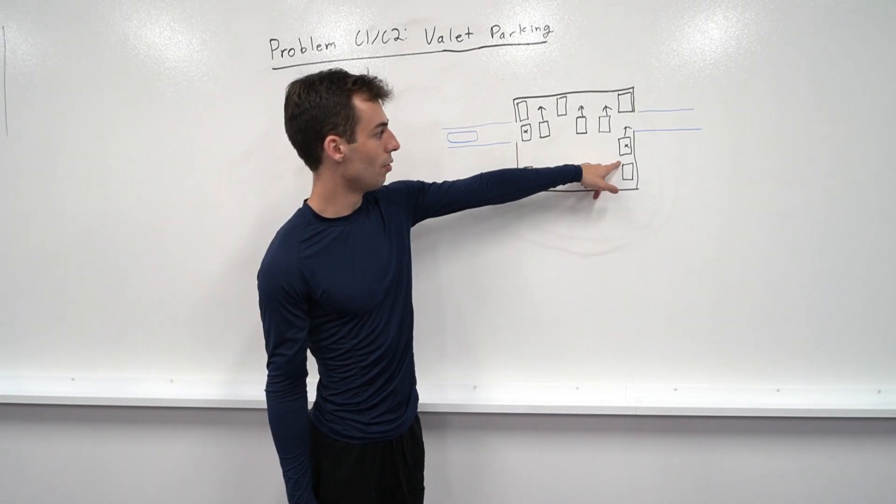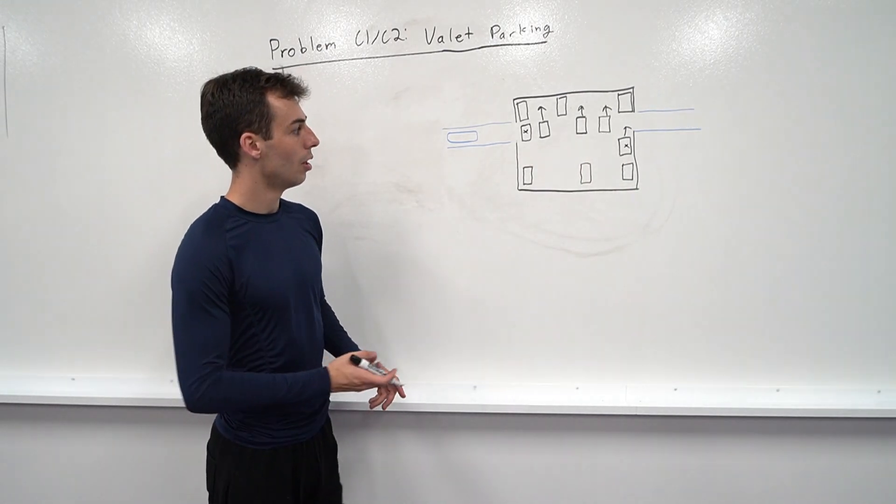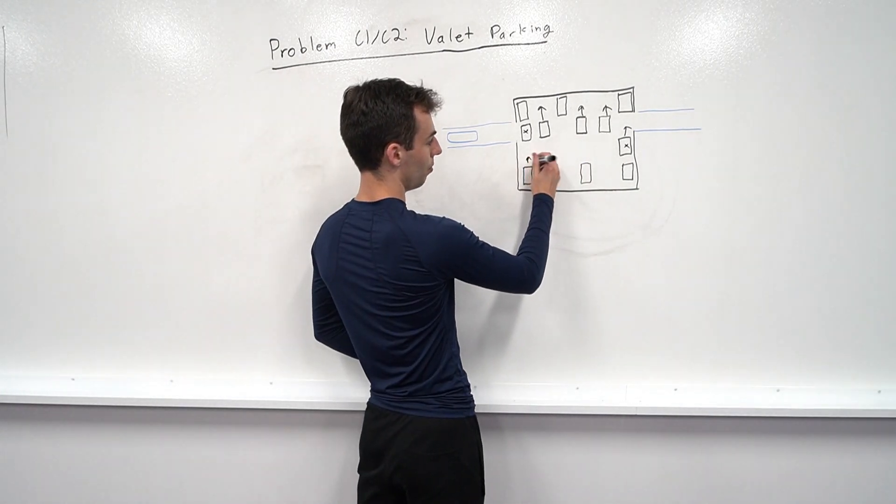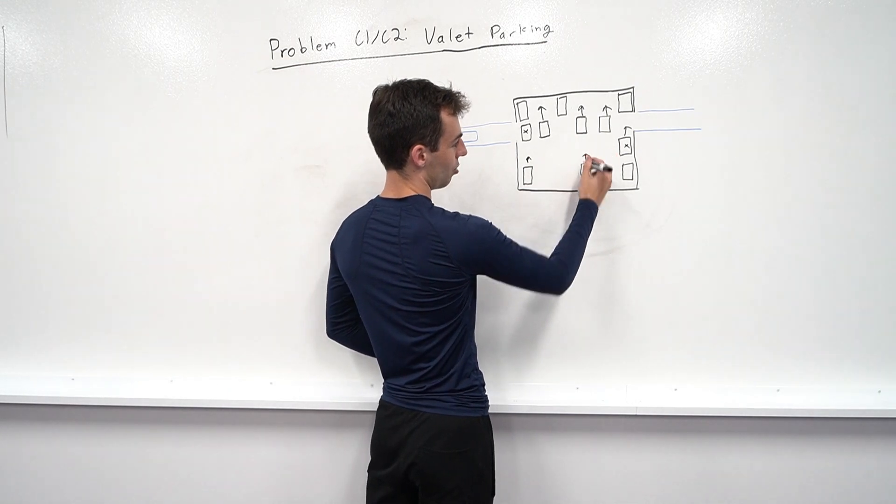So we'll have a total cost of three moves. Once for this, once for this, and then once for the move. Of course, these cars would move up too, but they don't matter in this case, so I didn't draw that.